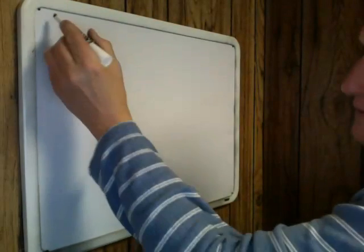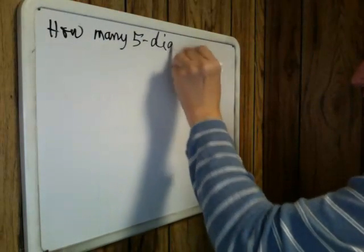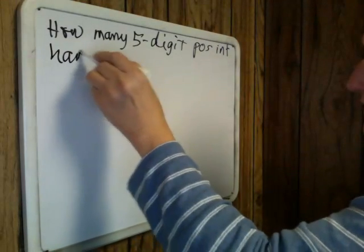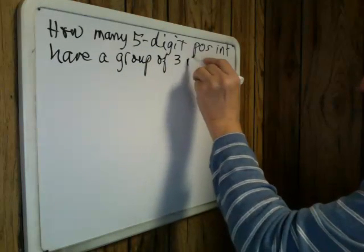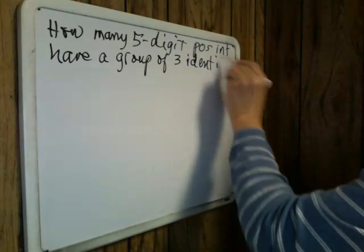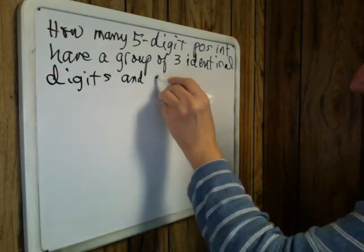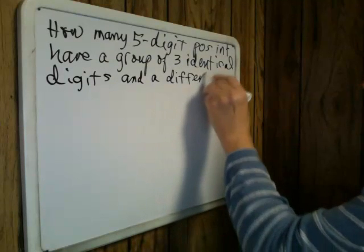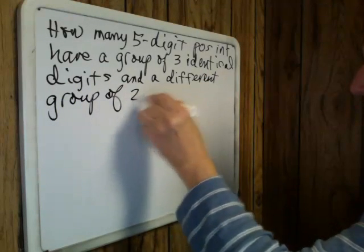Here's the question: How many five-digit positive integers have a group of three identical digits and a different group of two identical digits?